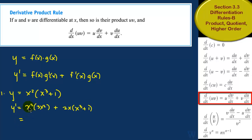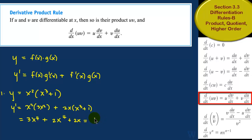We can simplify this by expanding, and it'll be 3x to the fourth plus 2x, so it's equal to 5x to the fourth plus 2x.